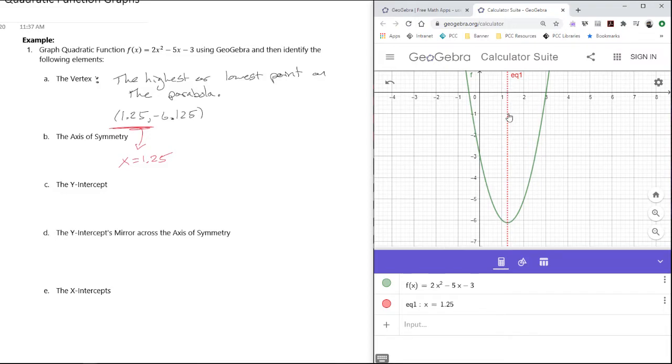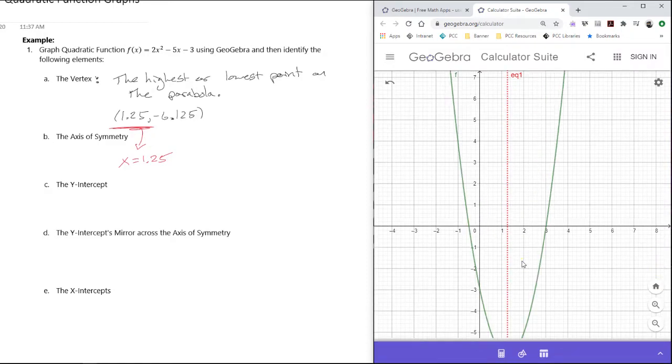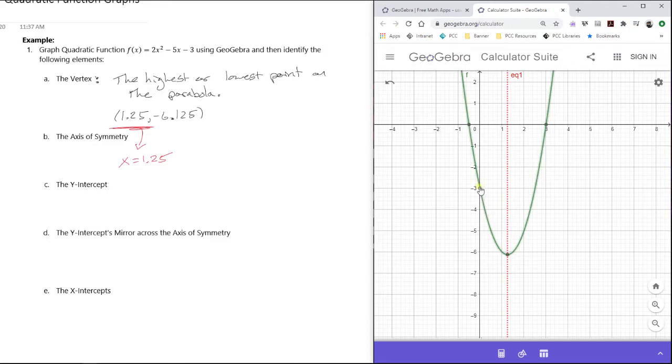It's just the symmetry line where we can see that the parabola is a reflection over that line. If I folded this along that dotted line, the parabola would fall right on top of itself. The next thing that we're looking for here is the y-intercept. I can just click on where the parabola is crossing the y-axis and GeoGebra will show us that y-intercept. It's the point (0, -3).